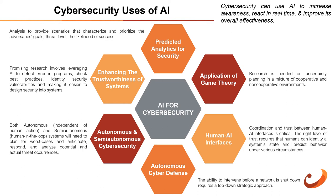Coordination and trust between human-AI interfaces is critical. The right level of trust requires that humans can identify a system state and predict behavior under various circumstances. There has been significant research into game theory models that can be used to understand attack plans and reason about potential defenses. But because an adversary's actions are still not easily observable and information is not perfect, more research is needed. Game theory models can be dual use — a model can be used for both cyber offense and cyber defense.